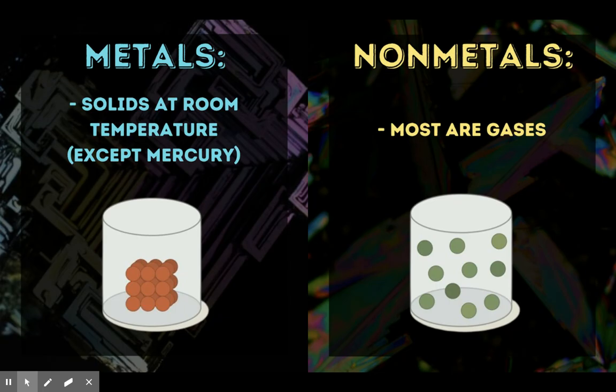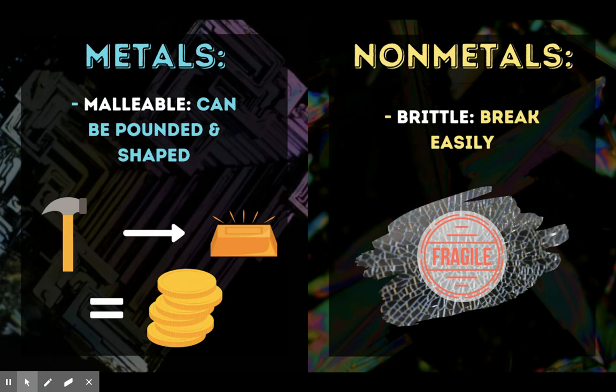Metals are typically solid at room temperature, except for mercury, while nonmetals are mainly gases and some liquid. Metals can be malleable — that means they can be pounded, hammered, and shaped, usually into thin sheets. And nonmetals are the opposite; they're brittle, they break very easily if they undergo pressure, so they're very fragile.